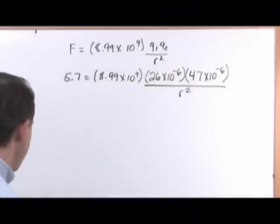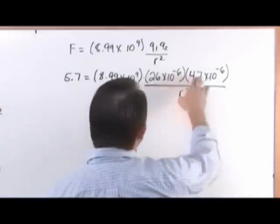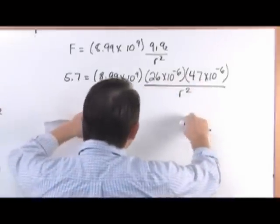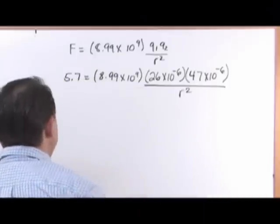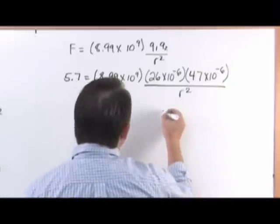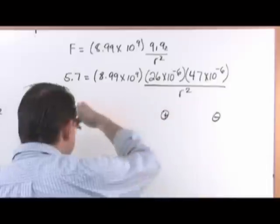Right. Now, we know that one of these charges is positive and one of these charges is negative. So the charges just tell you that they're going to be attracting each other, and that's actually what it says. Because the electrostatic force between them is 5.7 N. So that just tells you one of these things is positively charged, one is negatively charged, and they're going to attract each other.